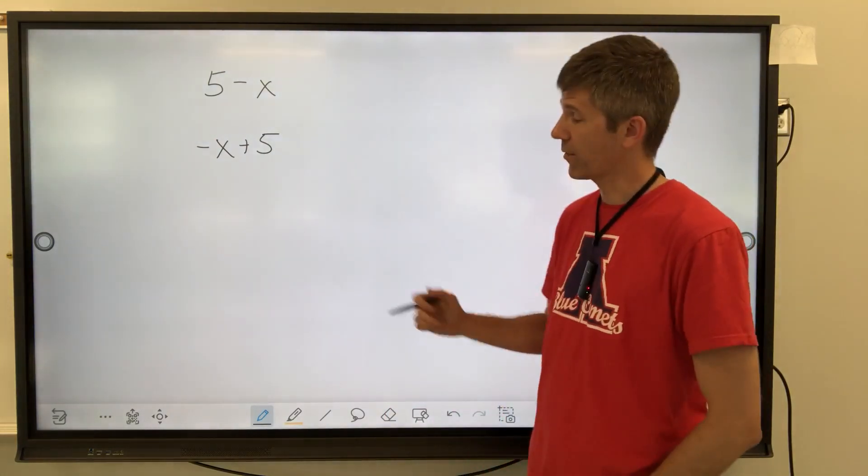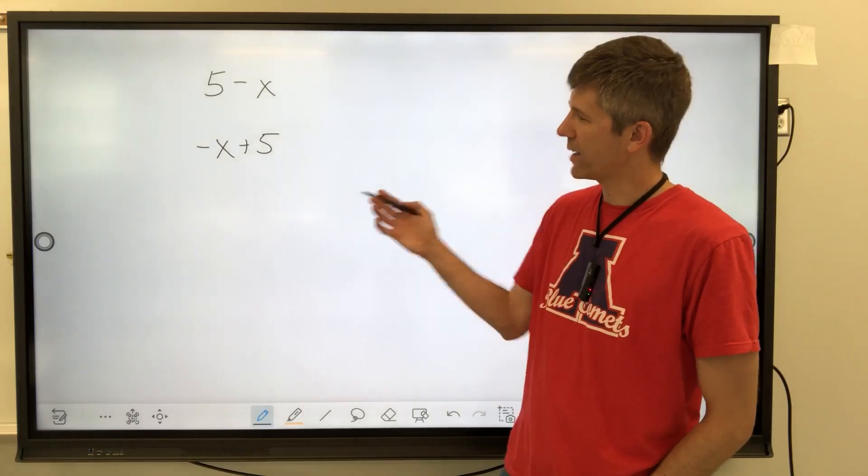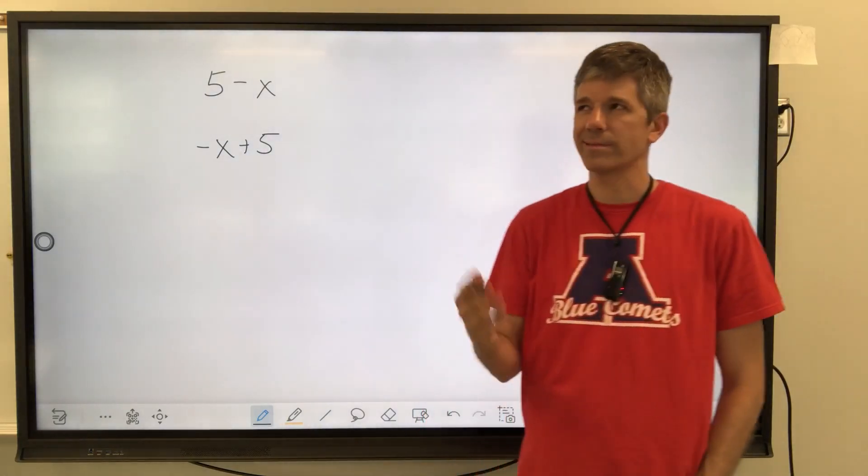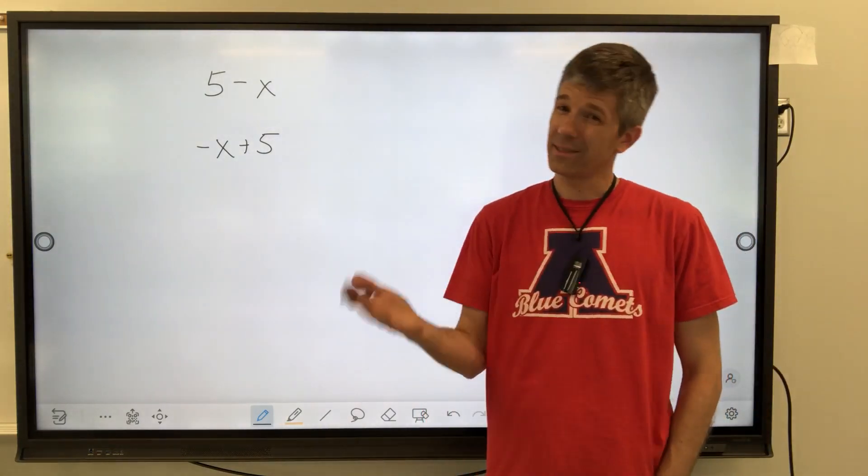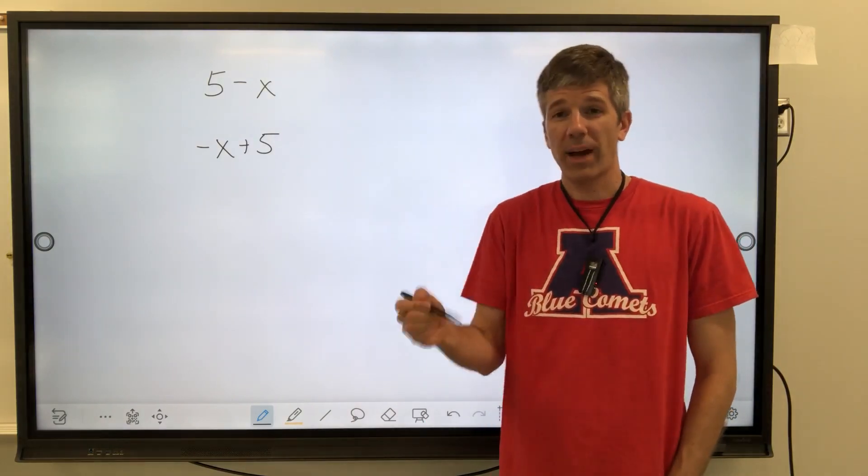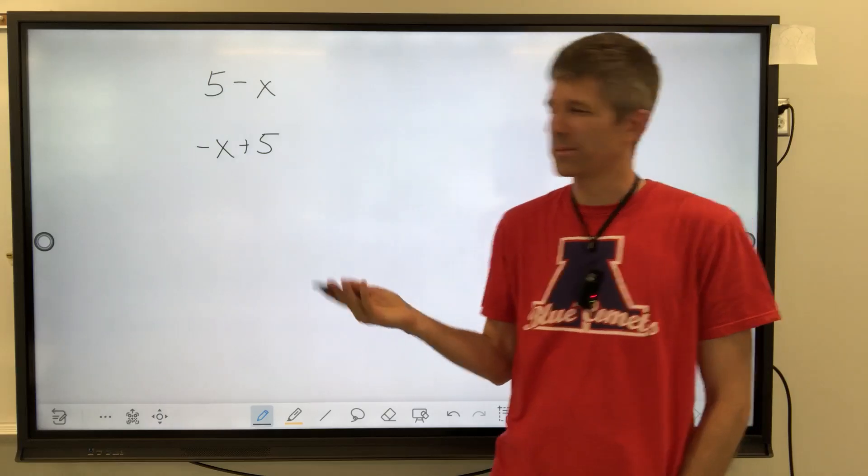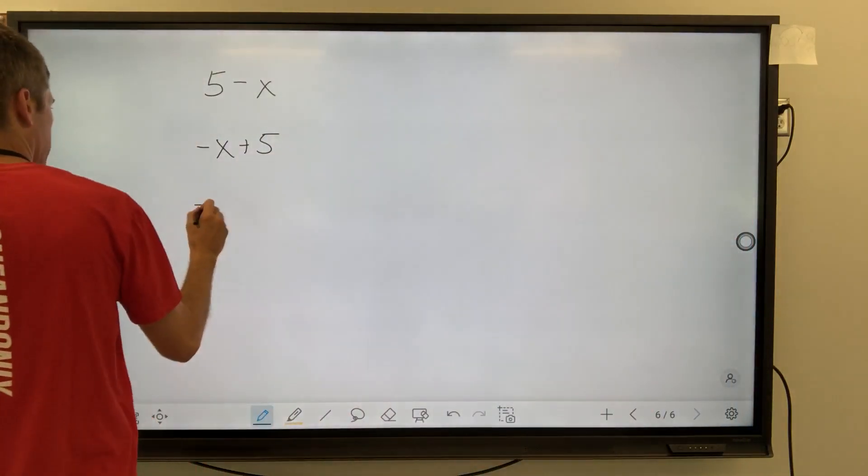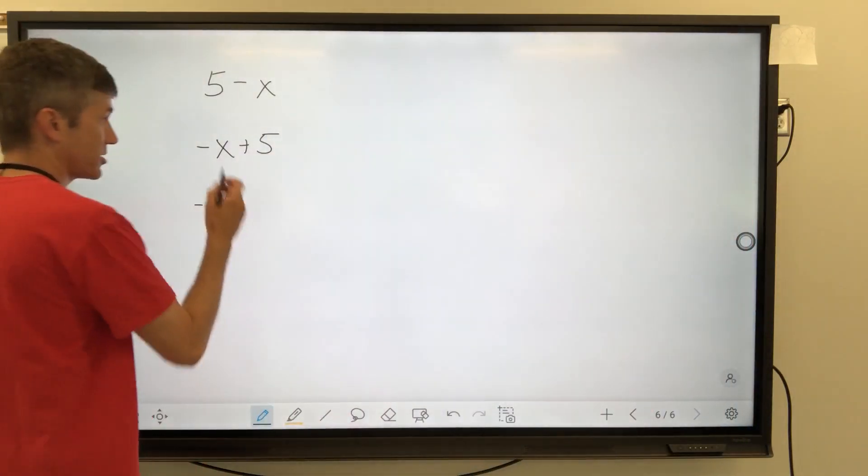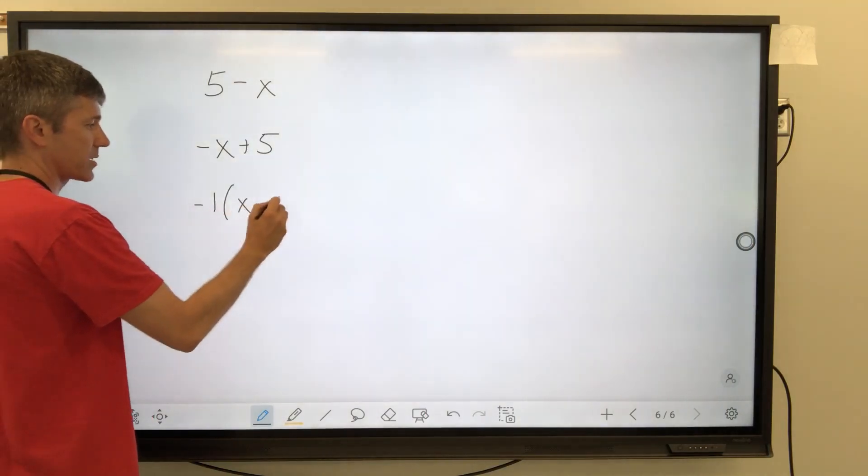Now we'll talk GCF. Is there a number that divides out of negative 1 and 5? Well, 1, but actually another thing that I like to do, I like to factor out any negatives that are in the very front. It just makes it convenient. Trust me, it does. So we're going to factor out a negative 1, and then that means it changes both of those signs, so we have x minus 5.